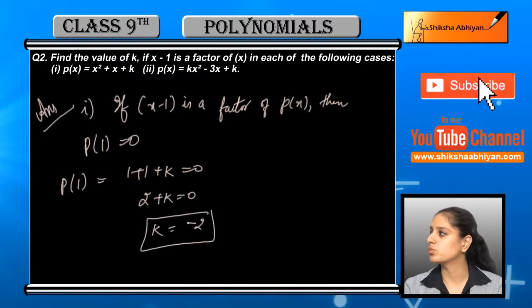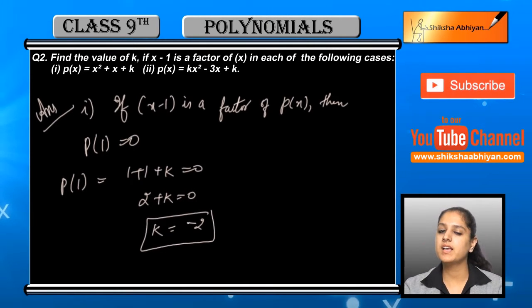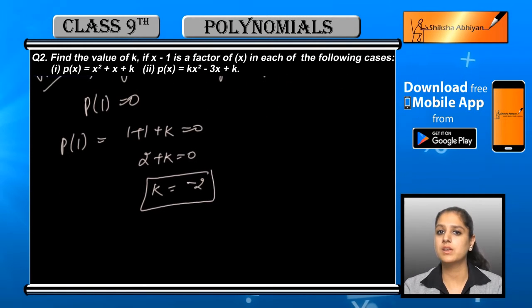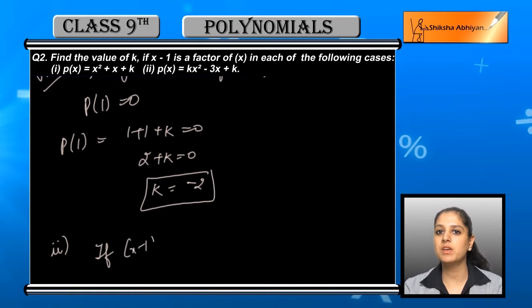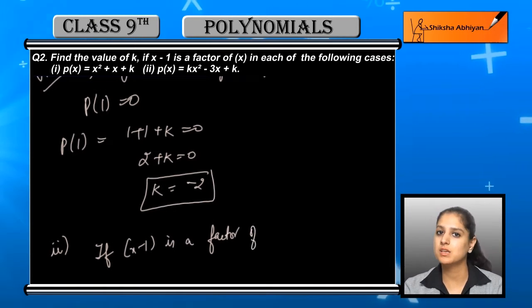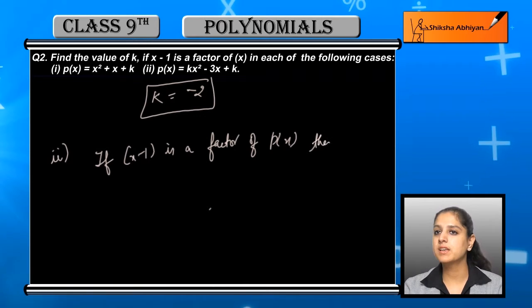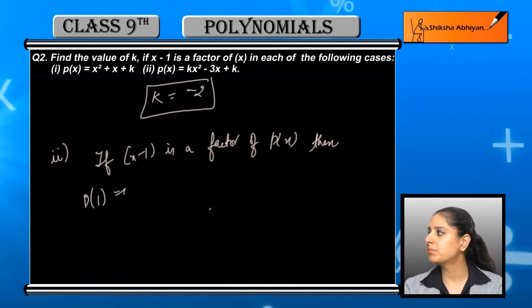Similarly, if x minus 1 is a factor of another polynomial given to us, we will calculate p(1) for this second polynomial p(x). Here p(1) is k minus 3 plus k equals 0.